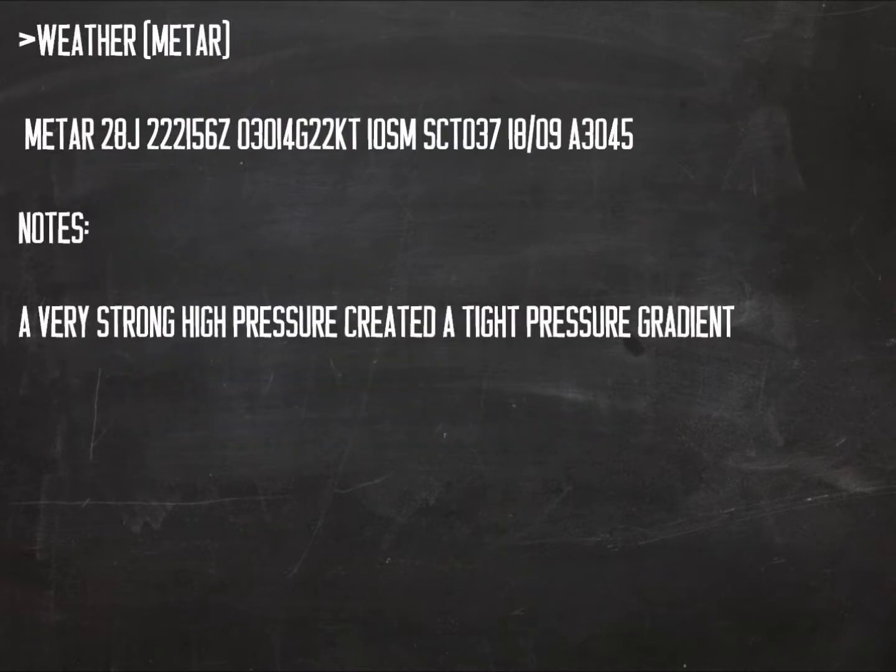Looking at the weather for today's flight, a strong high pressure system in the area intensified the pressure gradient, causing very strong winds. Sea level pressure was 30.45 inches of mercury. Surface winds were 030 degrees at 14 knots gusting to 22.